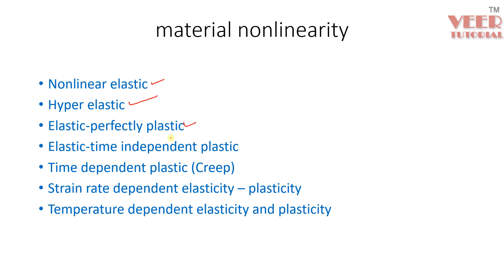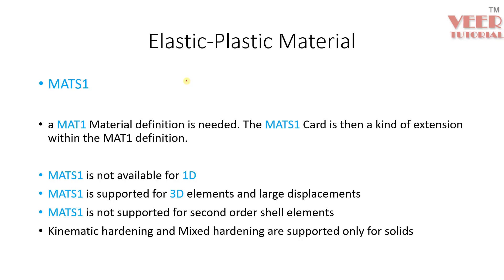In this course we will consider the elastoplastic material and the nonlinear elastic material. To define these types of nonlinearity, we already know that we define a MATTE1 card when we define the property for the material. Along with this MATTE1, we are going to define the MATTE S1 card for the nonlinearity.